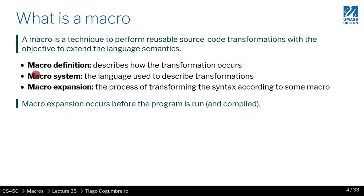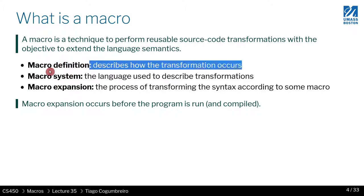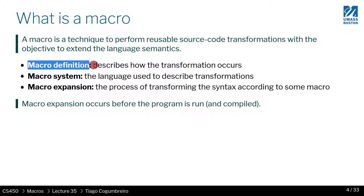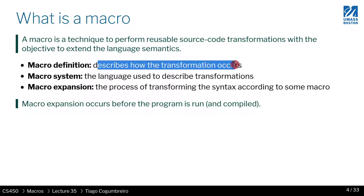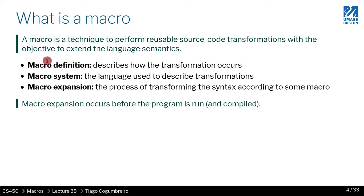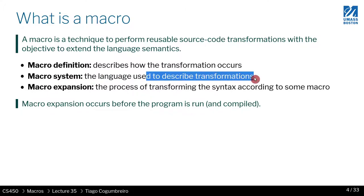There are three ideas that are important in macro systems. First is defining the macro — this is explaining programmatically how the source code transformation will work. The basic idea behind the macro system is really like a mini compiler, or you can extend the compiler or the parser to generate more code. The macro system is the language used to describe these transformations.